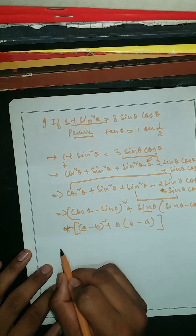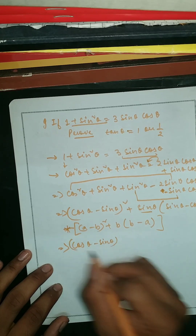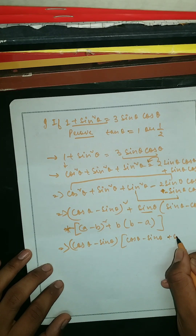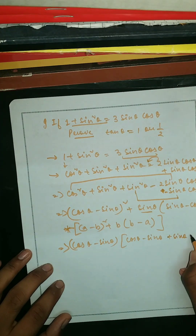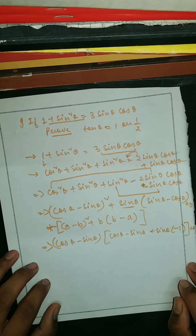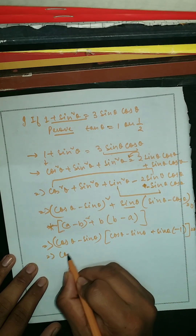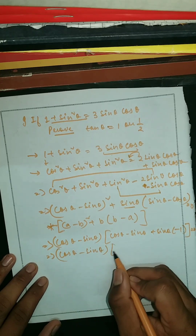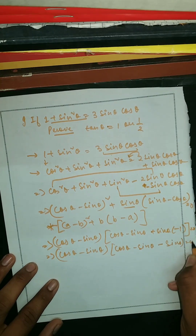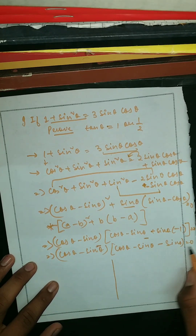So you have to learn this formula. Then it becomes (cosθ - sinθ) times [(cosθ - sinθ) + sinθ(-1)], which equals zero.